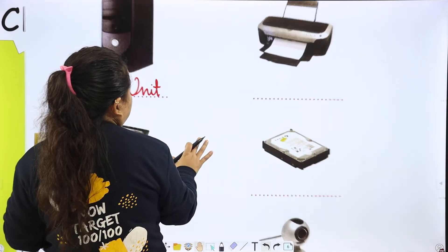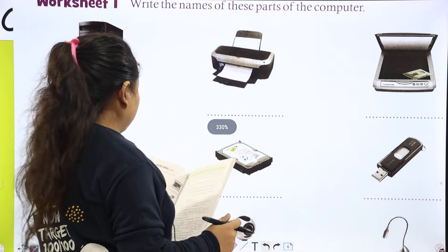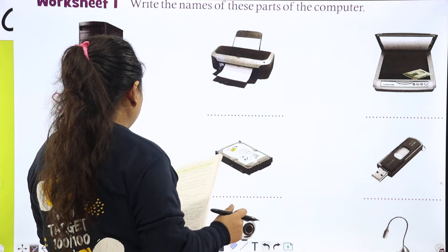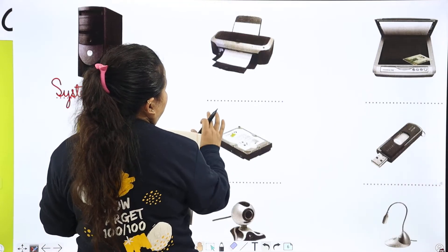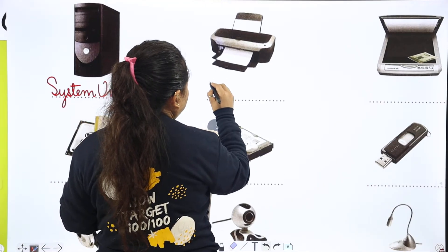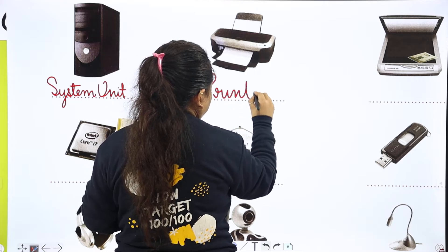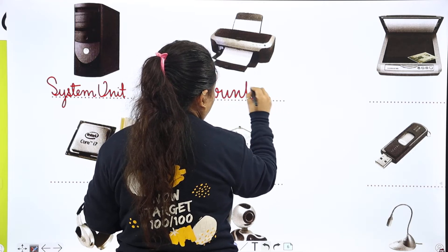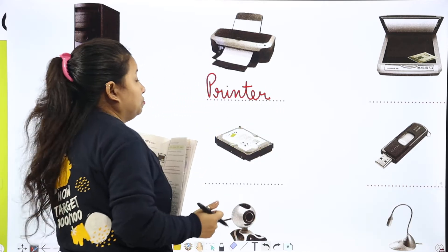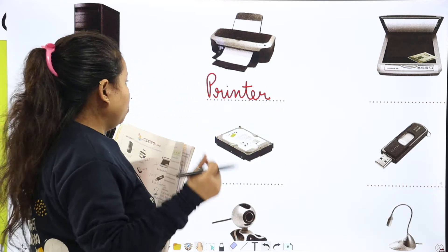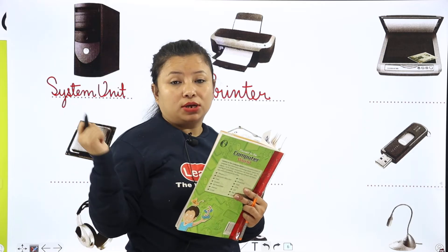Next is printer. Printer is an output device, because we give input and we get the result as output.